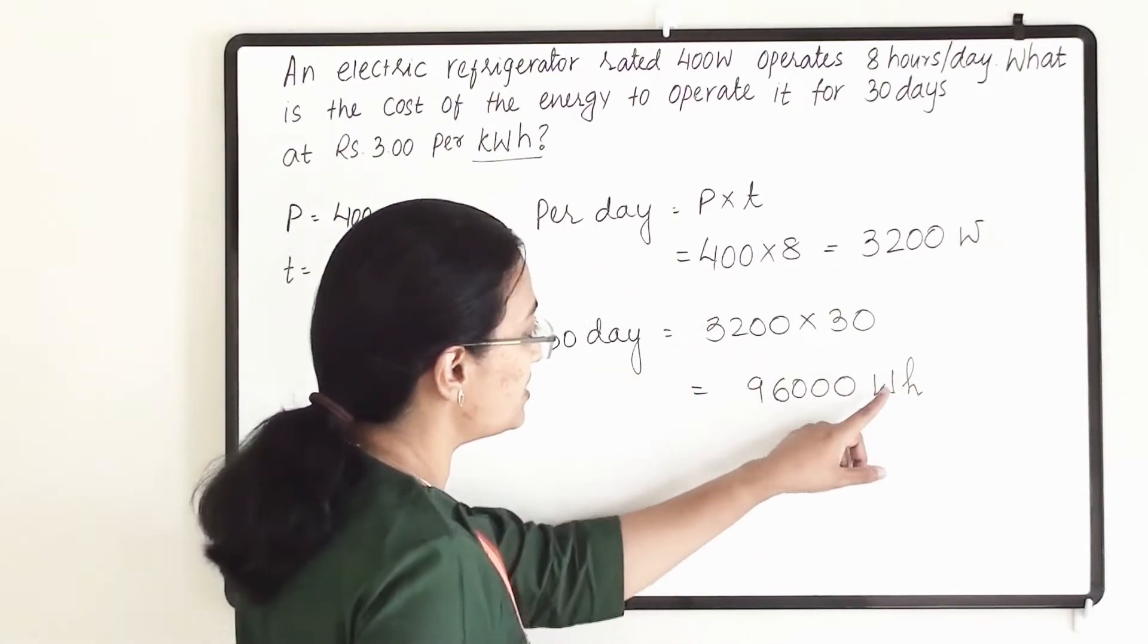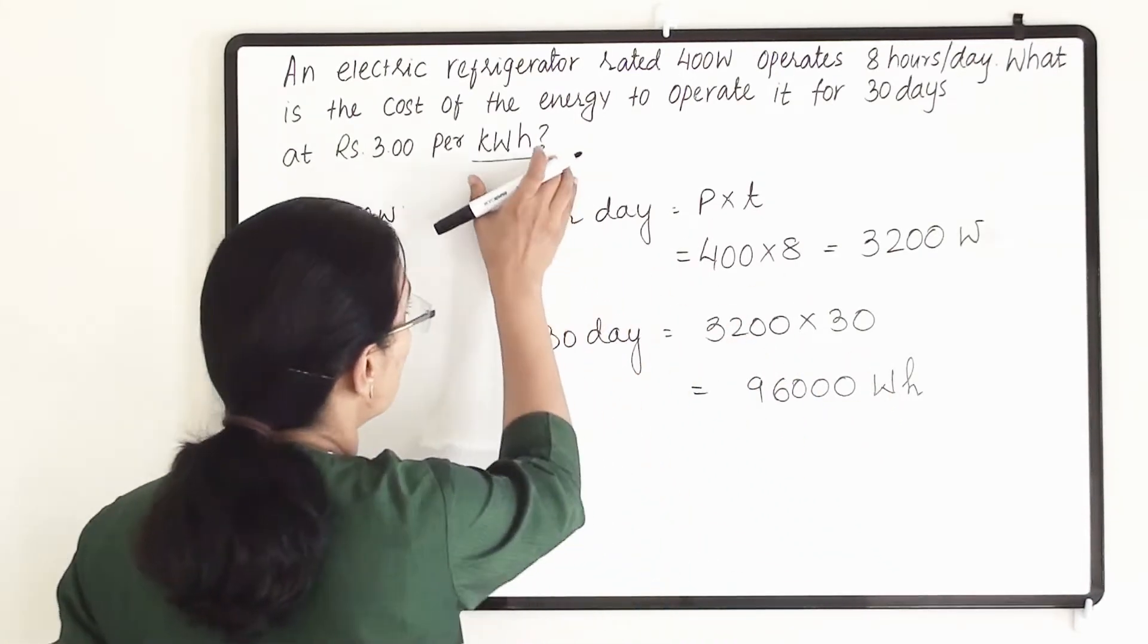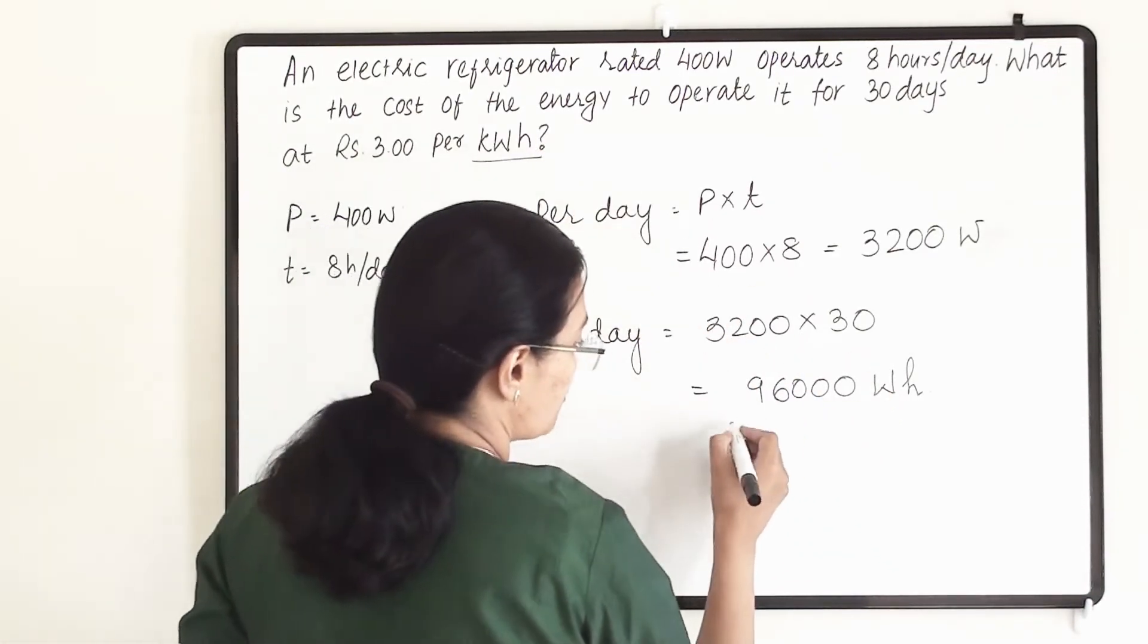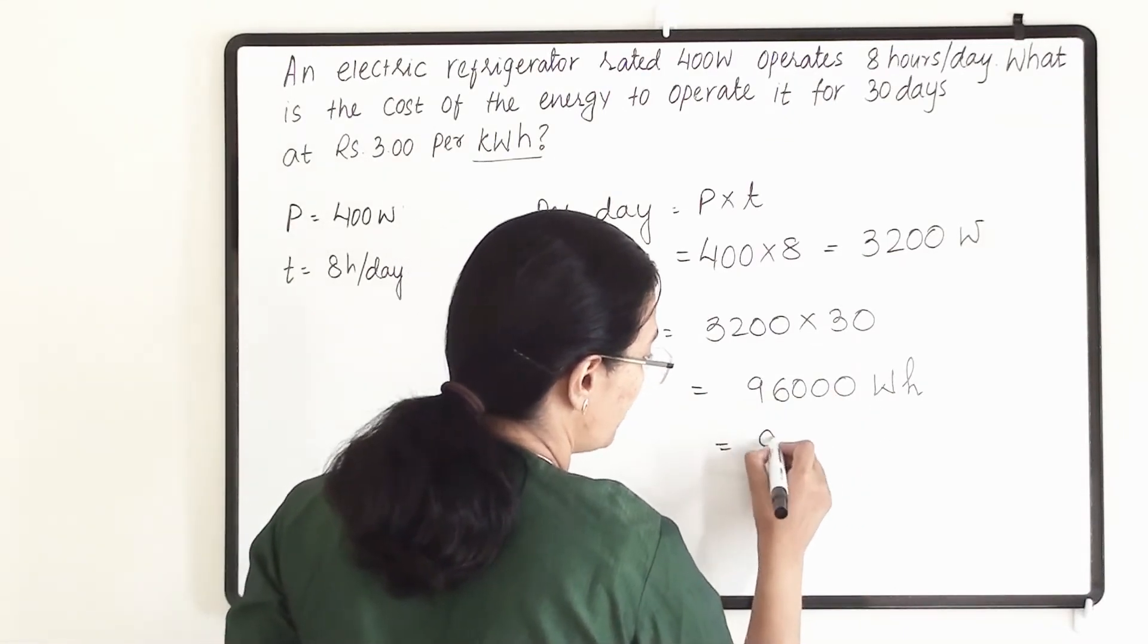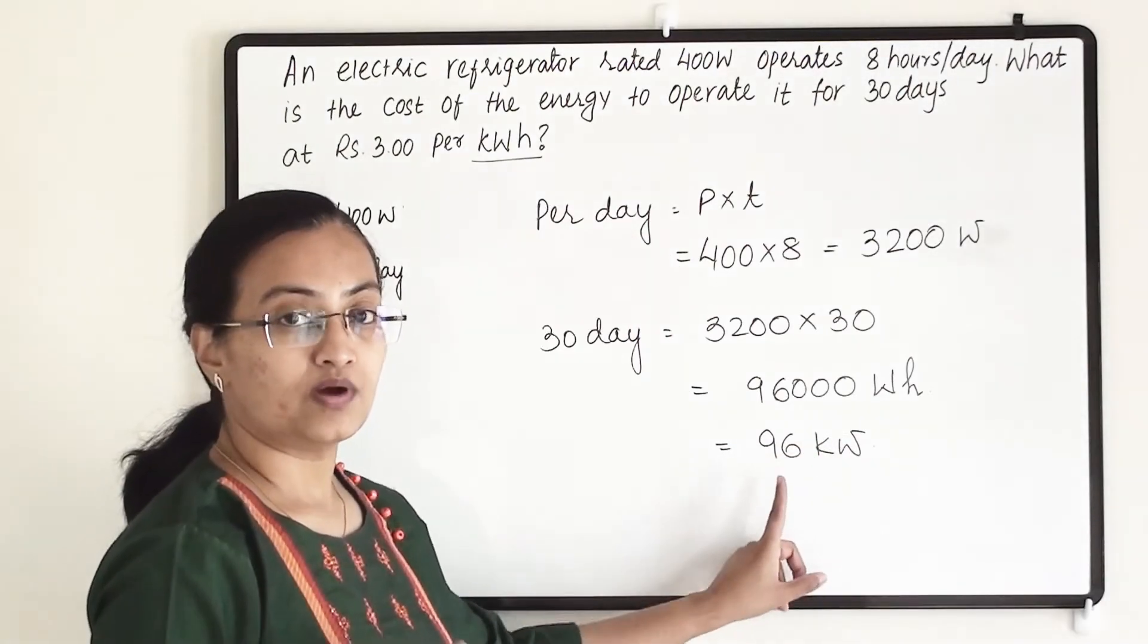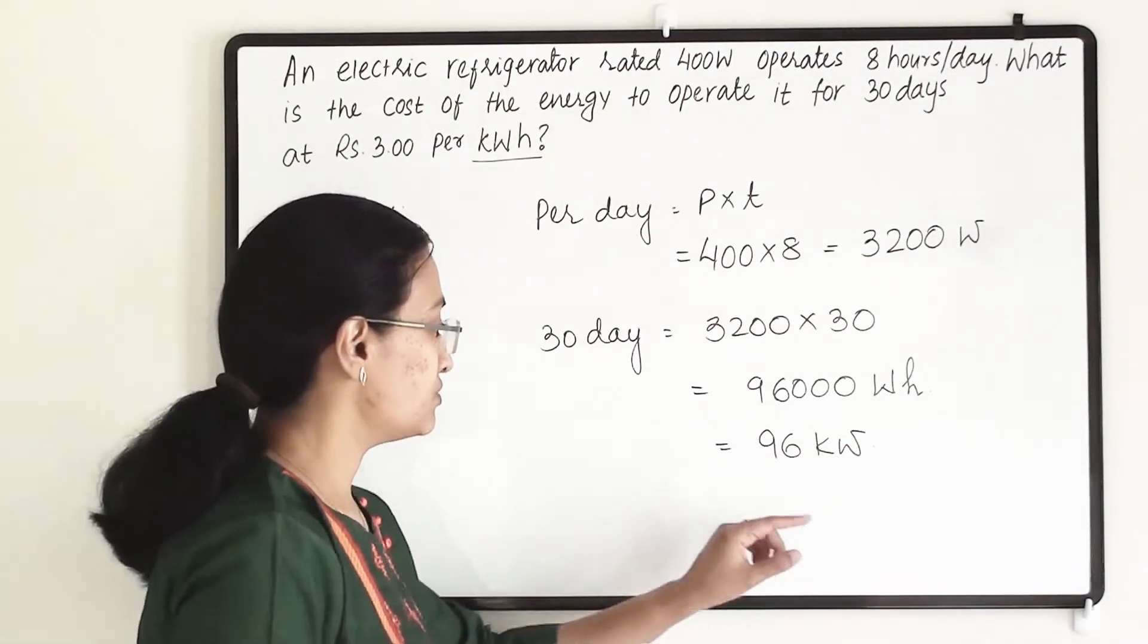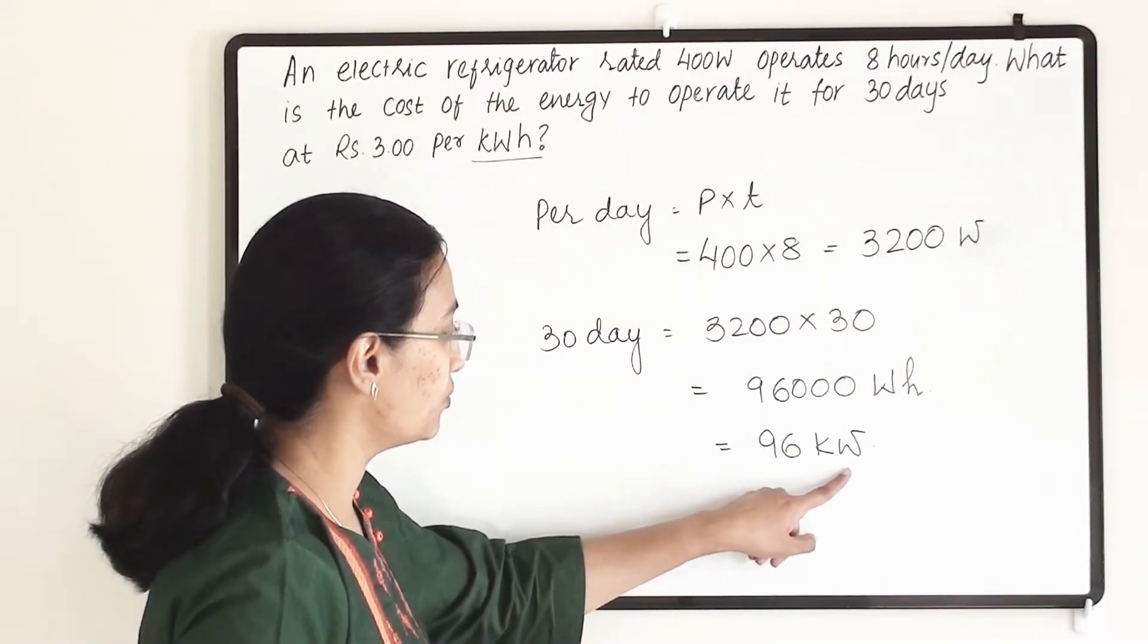Now we have to convert watt hour into kilowatt hour because our unit is kilowatt hour. So when we are converting this watt into kilowatt it is going to give us 96 kilowatt hour. Because 1 kilowatt equals to 1000 watt. So 96000 watt will give us 96 kilowatt.